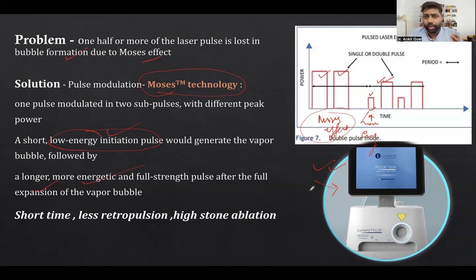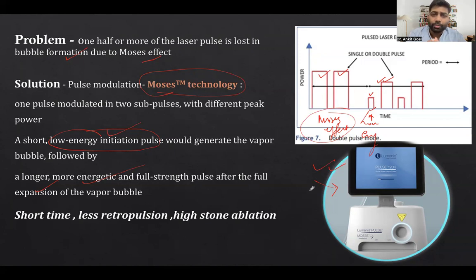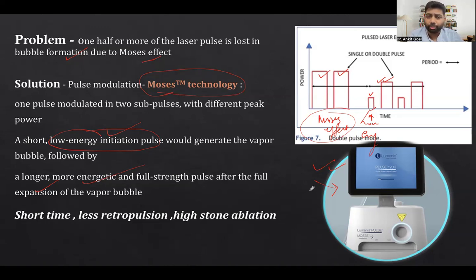To summarize what we discussed: the basic principles of how laser works, the types of laser — pulsed and continuous emission — and the problem with pulsed laser which is the Moses effect, and the solution to that problem which is Moses technology. Please let me know if you have any questions. There is a longer discussion on different types of laser which we will cover in class. Hope you find this useful — thank you.